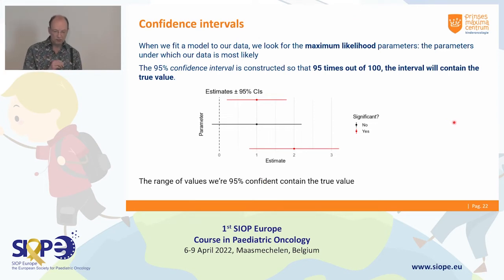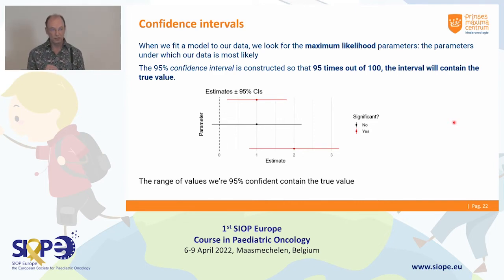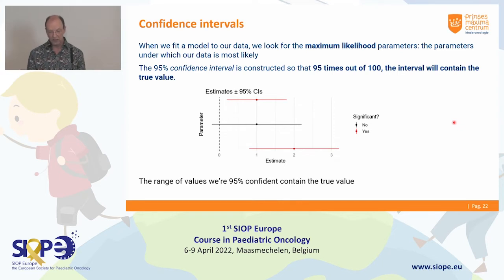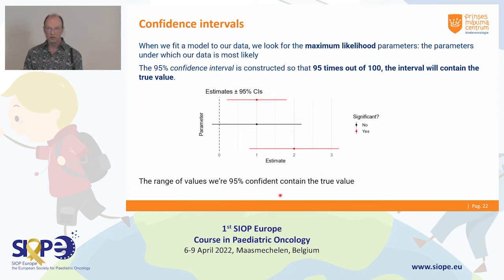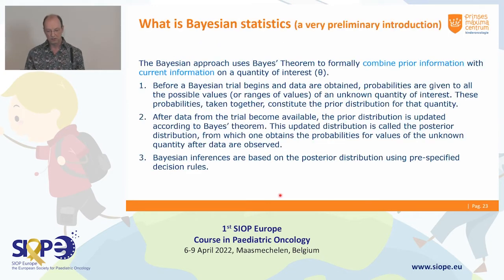What a confidence interval is not: it's not a range of values we are 95% confident contains the true value — that's not what it is, because you have only drawn one sample. However, that is how it is often interpreted. And actually, this is more the Bayesian way of looking at it. So forget about it in the frequentist sense — now we go to the Bayesian part.